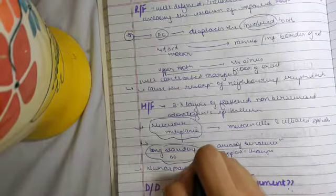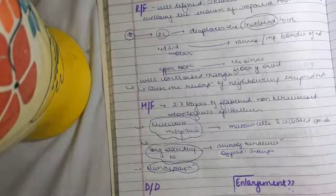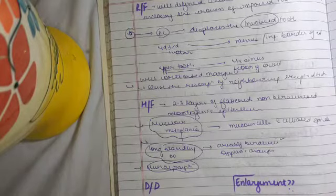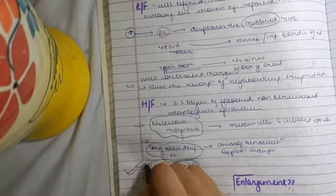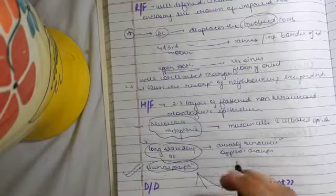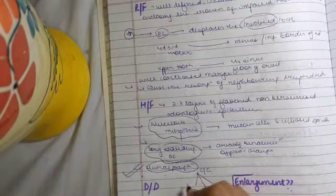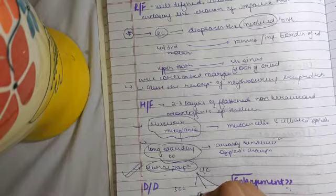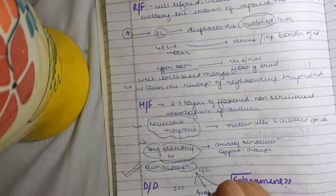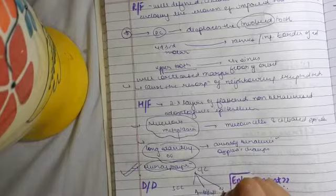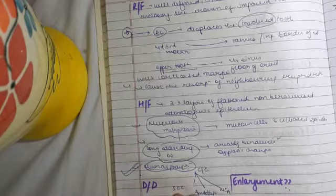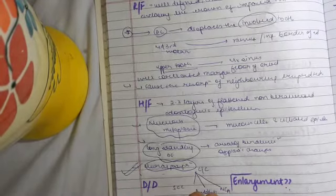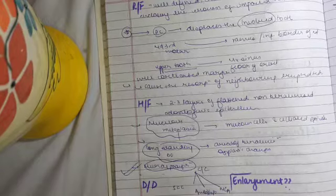Also one more keyword: mural proliferation. Sometimes you see there is a bud-like proliferation of the cystic epithelial cells. This is very important because it causes a lot of complications. It can lead to squamous cell carcinoma, it can even lead to ameloblastoma, or it can even lead to mucoepidermoid carcinoma. Differential diagnosis includes OKC and unicystic ameloblastoma.